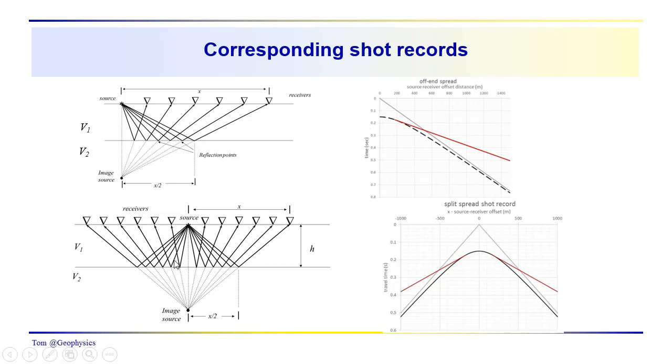And down here we have the split spread, and you can see direct arrivals going out to both ends of the receiver array in both directions. We have critical refractions likewise to both sides of the source. And the hyperbola extends into the negative x range and the positive x range is symmetrical about the origin in this case because the layer is flat. It's not dipping. So these are basic relationships that we've discussed previously.